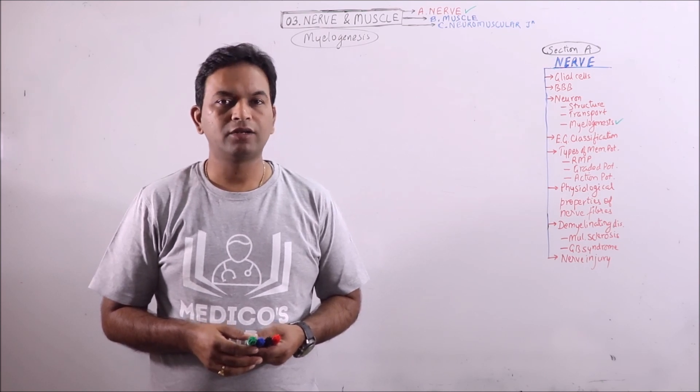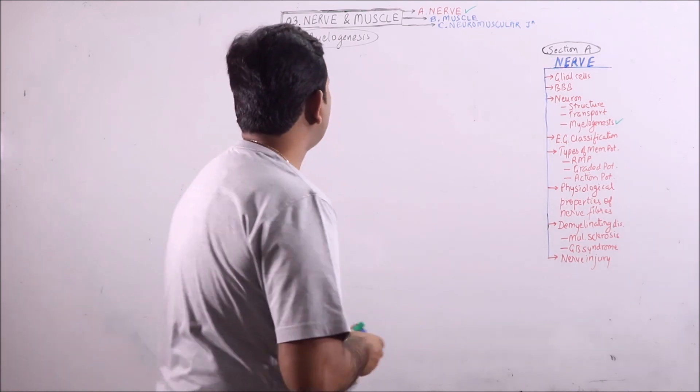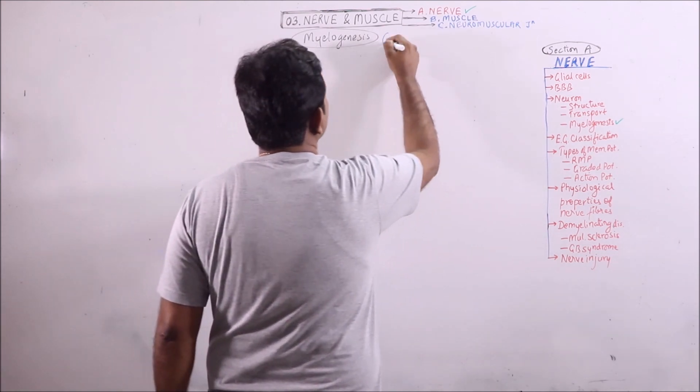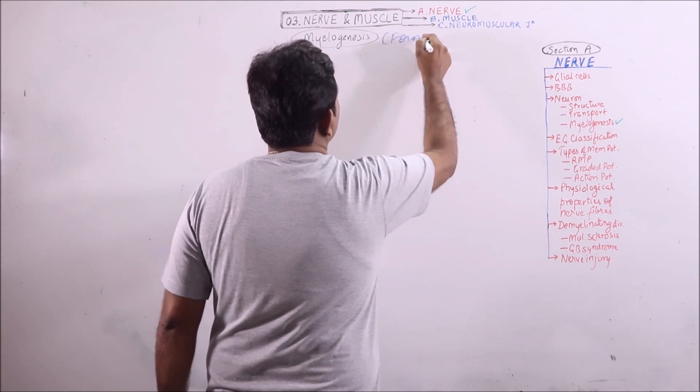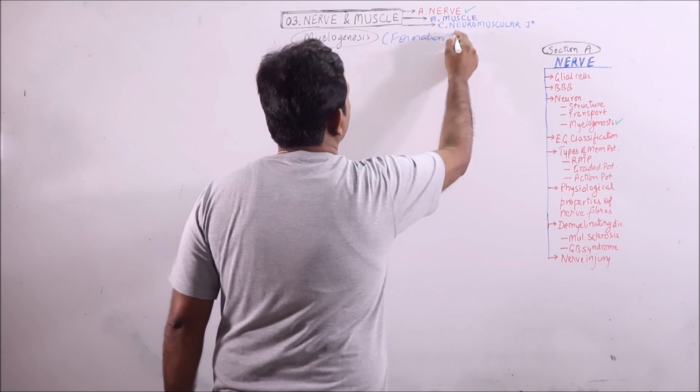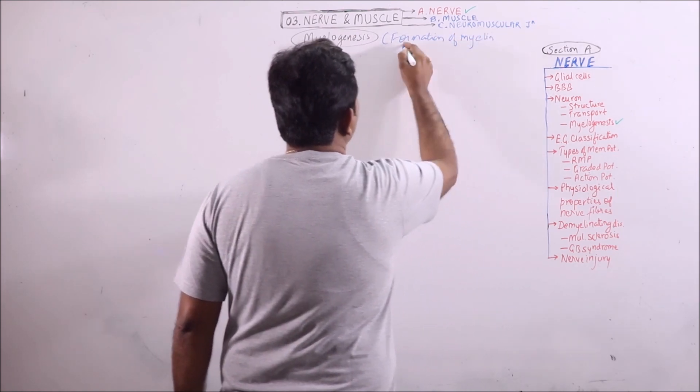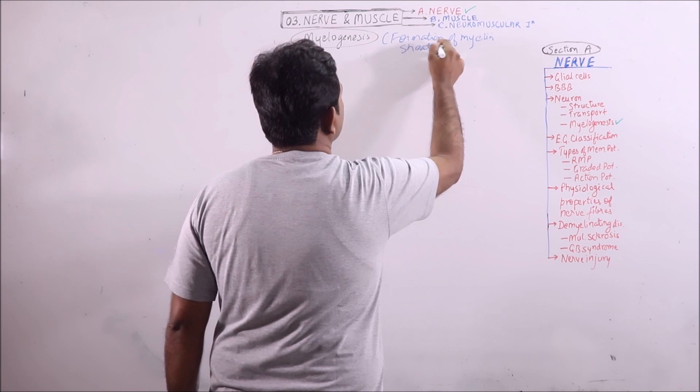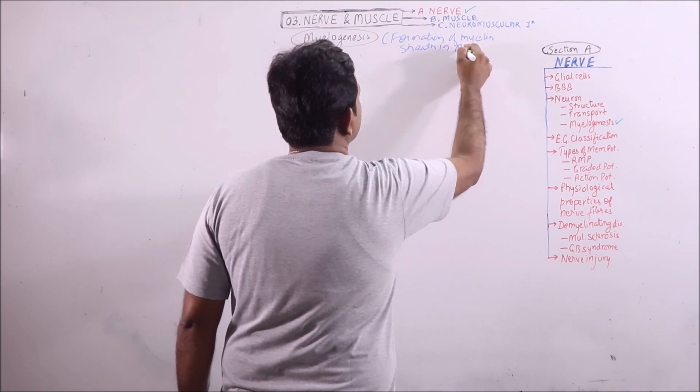In this video I am going to discuss myelogenesis. Myelogenesis is the formation of myelin sheath in nervous system.